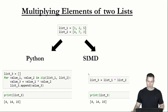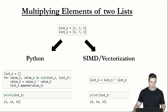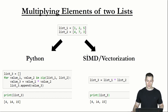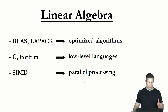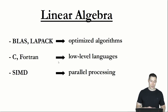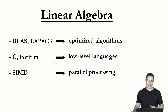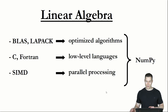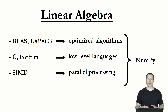Expressing code in this way — replacing for-loop logic with vector operations — is called vectorization, where 'vector' simply means a list of numbers. These three things — optimized libraries, low-level languages, and SIMD — allow us to greatly improve our code's speed. The Python library that takes advantage of all three is called NumPy. To take advantage of NumPy we have to vectorize our code, and that will be the topic of the upcoming video. Thanks for watching and hopefully I'll see you in the next one.